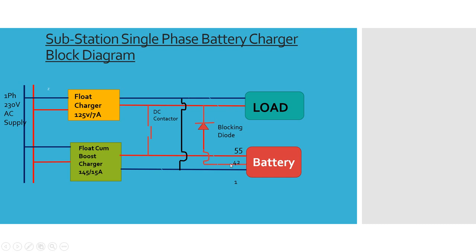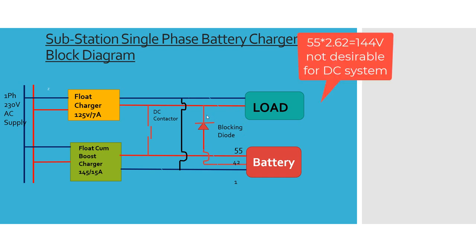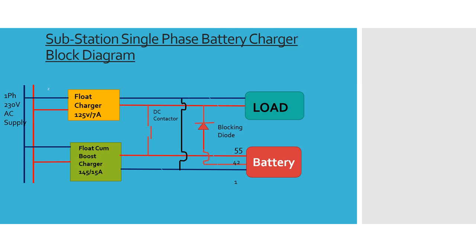From the 42-cell tap — called the tapping cell — the voltage will be supplied to the load. The reason is that during boost charging, the per-cell voltage will shoot up to around 2.6 volts. If you apply 2.6 volts to 42 cells, it will be around 110 volts, which is the desired voltage to the load. If we supply 2.6 volts per cell across all 55 cells, it will be 143 volts — which is not the desired load voltage and there will be some damage to the tripping coils and closing coils. So we have to carefully monitor whether this blocking diode is working.